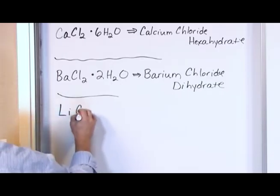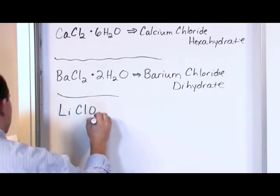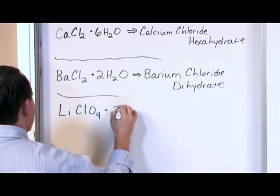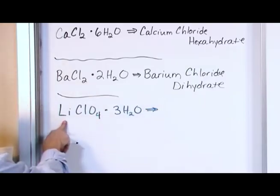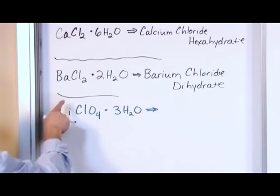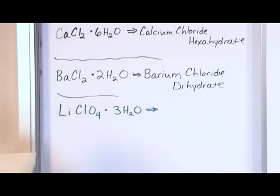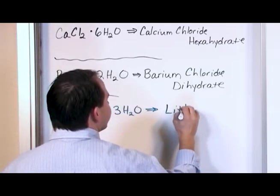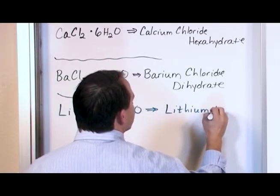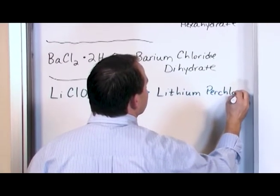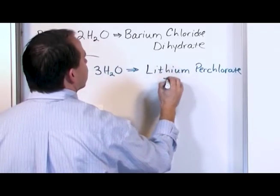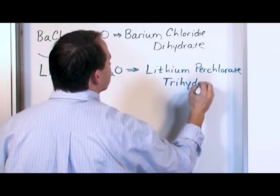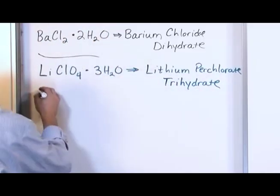What if I have lithium ClO4 and three water molecules? How would this be done? Well, it's lithium and what is this polyatomic ion? We've talked about that. You could probably find your table of polyatomic ions in your book and see that ClO4 is perchlorate. So this is lithium perchlorate trihydrate.